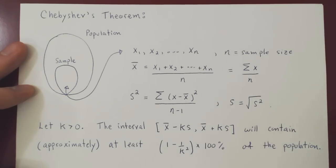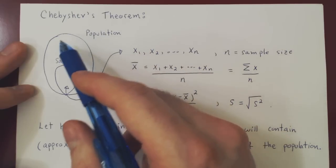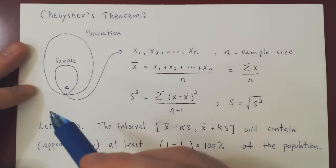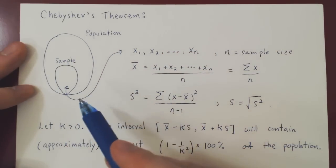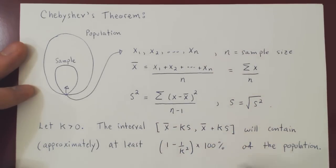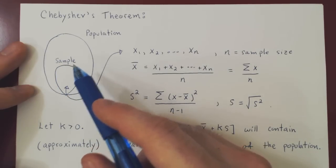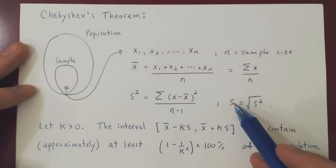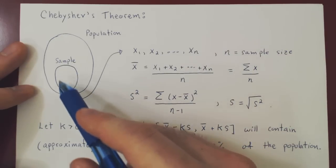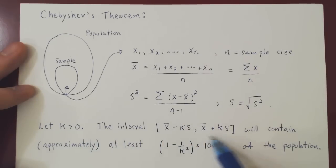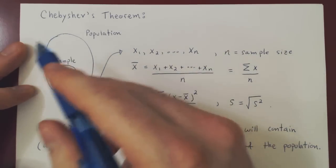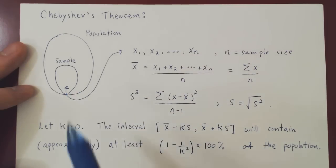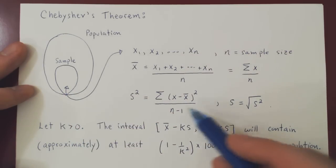The population is whatever values you're measuring. For example, consider a population of people and ask their age — the population consists of numbers giving the age of each person. We take a much smaller sample, compute the sample mean and sample standard deviation, and our conclusion is that this interval will contain at least approximately this percentage of all population values. In the end, we have a conclusion about the entire set of population values, not only about our much smaller sample. And that's Chebyshev's theorem.